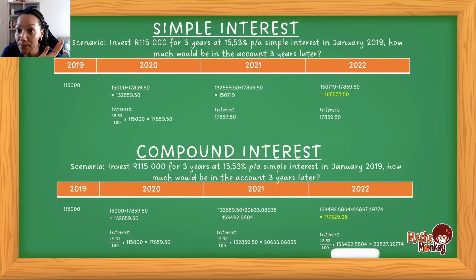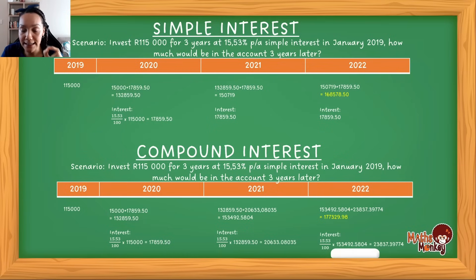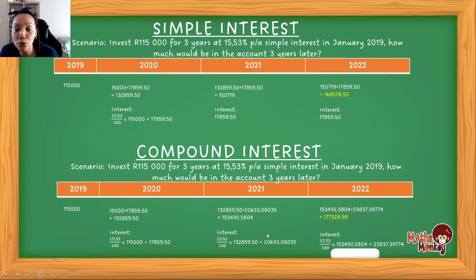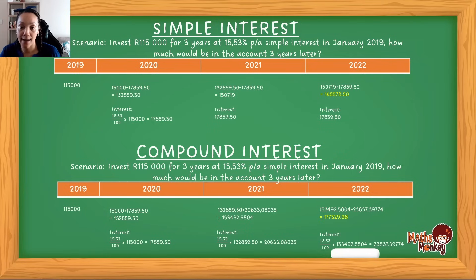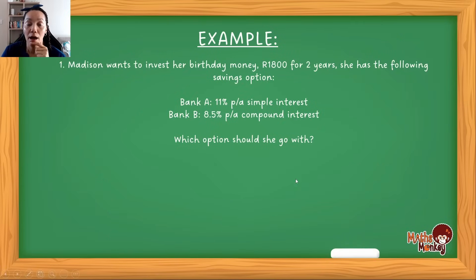To summarise: with simple interest you calculate interest once on the original value and that same amount is added every year. With compound interest, you use the amount currently in the account to calculate each year's interest — you are always earning interest on interest. When saving money you obviously want the compound interest option because you earn more over time.